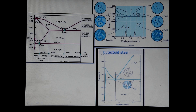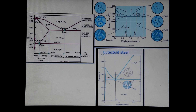The difference between the hypoeutectoid and hypereutectoid reactions is what forms on the grain boundaries. In the hypereutectoid, the grain boundaries are cementite. In the hypoeutectoid, the grain boundaries are alpha ferrite. It is worth noting that alpha ferrite is soft and ductile, while cementite is hard and brittle.